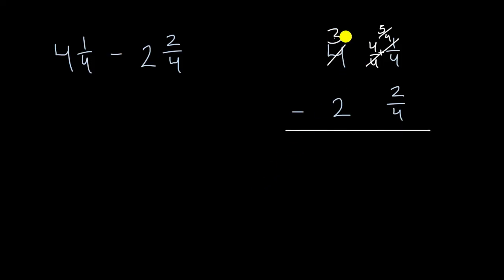So I can rewrite this as three and five-fourths minus two and two-fourths. Once again, why is that useful? Because five-fourths is greater than two-fourths. What is five-fourths minus two-fourths? Well, that's going to be three-fourths. And then what is three minus two? Well, that's going to be one. And we get one and three-fourths.